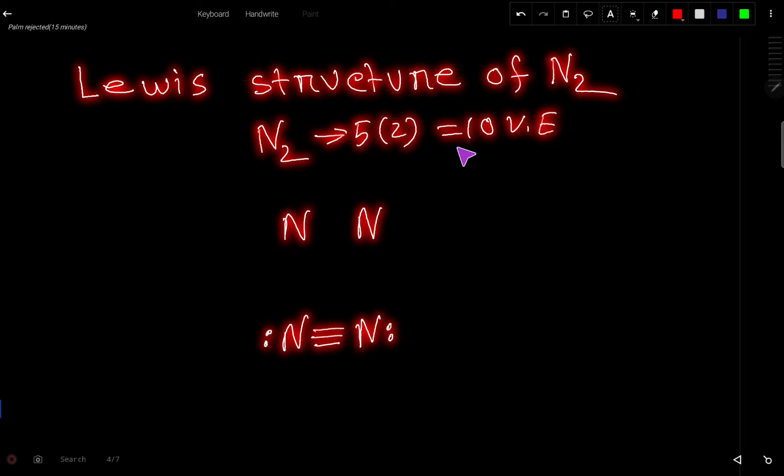These 10 valence electrons have 2 tasks at the same time. The first task is to connect these 2 nitrogen atoms together, and the second task is to satisfy the octet for both the atoms.